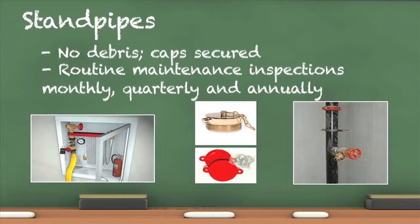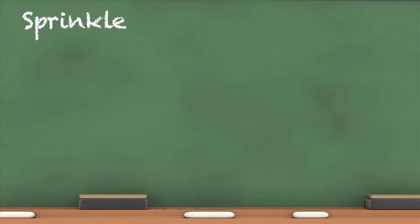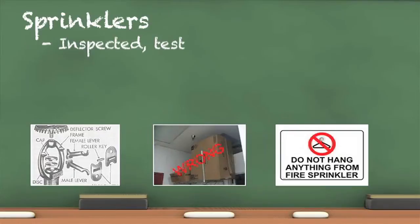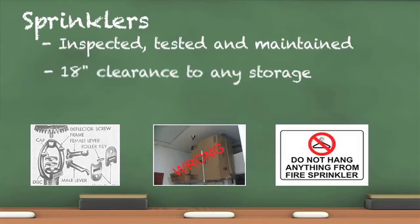Documentation of monthly, quarterly, annual, and 5-year inspection, testing, and maintenance is required. Sprinkler systems are required to be inspected, tested, and maintained monthly, quarterly, annually, and every 5 years. For the sprinkler system to work properly, nothing can be stored above or within 18 inches below the level of the sprinkler head. Nothing can be attached to any sprinkler system component. If the sprinkler system is not functioning, a fire watch is required.